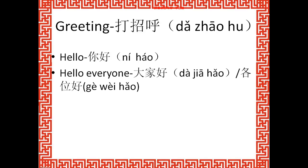You can also say 各位好 (gè wèi hǎo). 各 means each individual — everyone, everyone, one person, one person, individual. And 位 is a counting word for people, like one, two, three, four — the amount of people. So 各位好 means 'hello everyone.' You can use both 大家好 and 各位好.